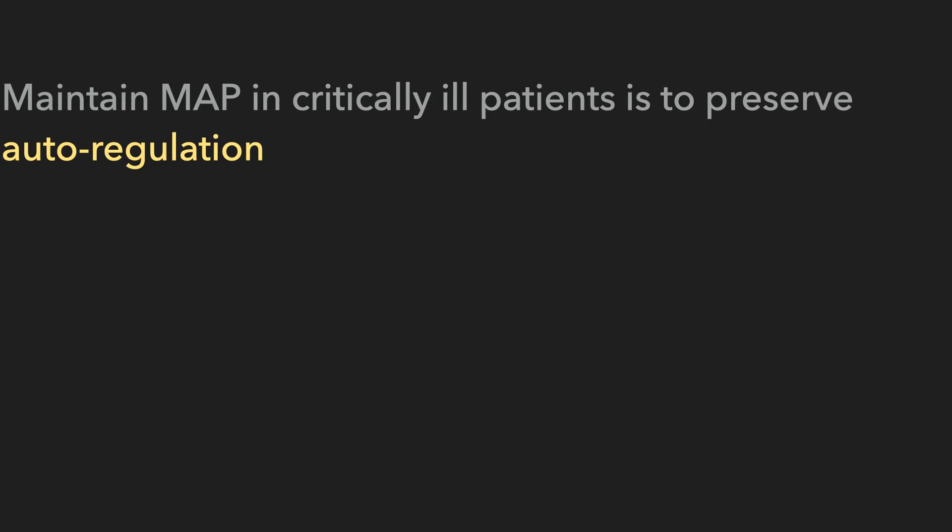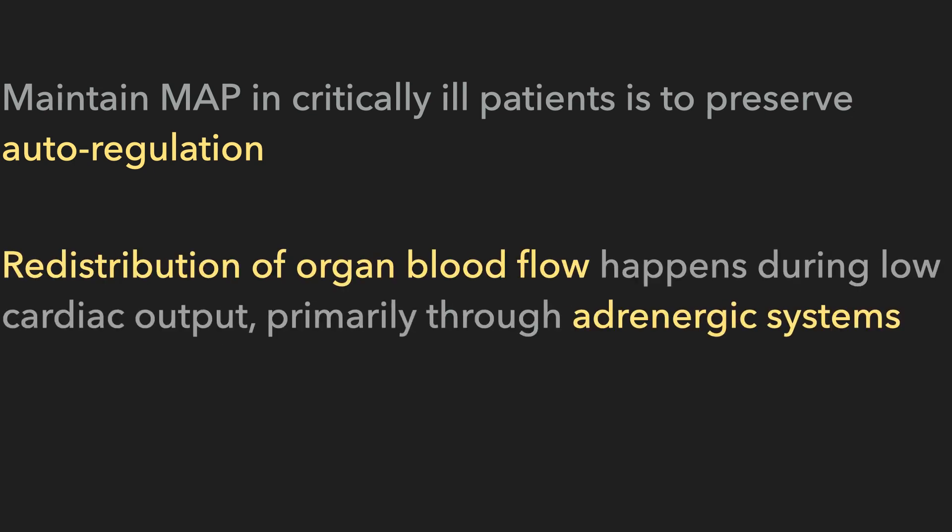Let me summarize what we've discussed. Maintaining MAP in critically ill patients is to preserve autoregulation. Primarily, the reason we use vasopressors is to increase MAP to a perfusion pressure level where the body is in the red region — where there is steady blood flow and the body can autoregulate. The redistribution of organ blood flow happens during low cardiac output, primarily through the adrenergic systems.